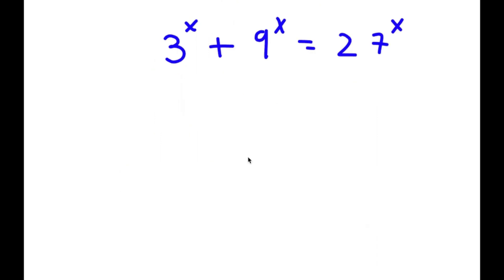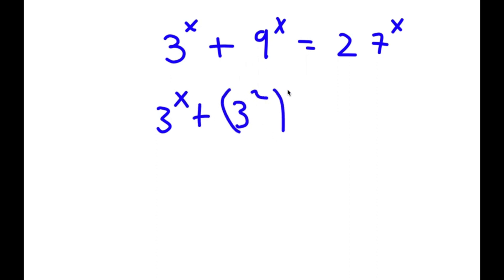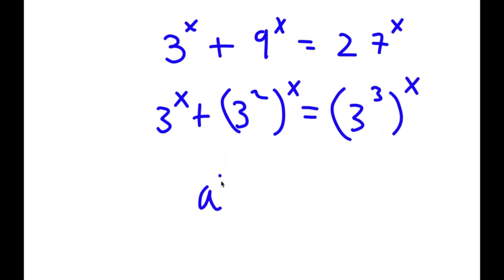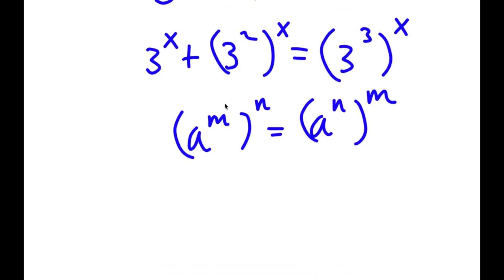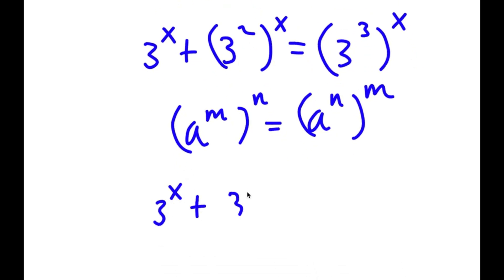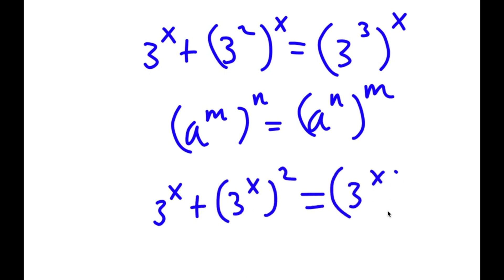In this problem, I have 3 to the power of x plus 9 to the power of x is equal to 27 to the power of x. To solve this, I'm going to rewrite 9 to the power of x as 3 squared to the power of x, and 27 to the power of x as 3 to the power of 3, to the power of x. Using the rule that a to the power of m to the power of n equals a to the power of n to the power of m, I can rewrite these as 3^x plus (3^x)^2 equals (3^x)^3.